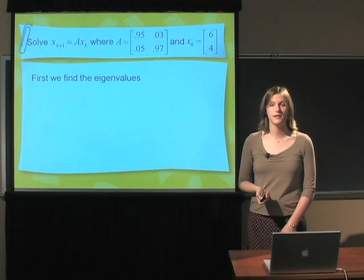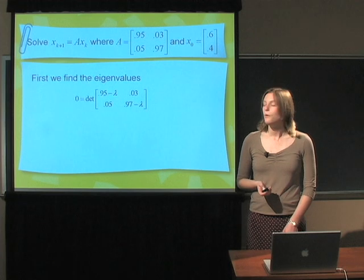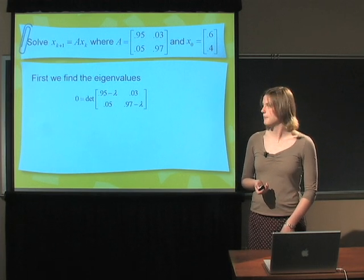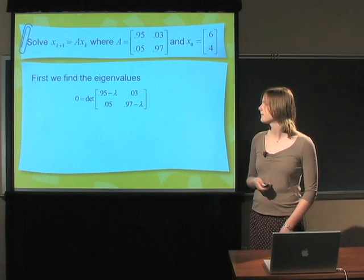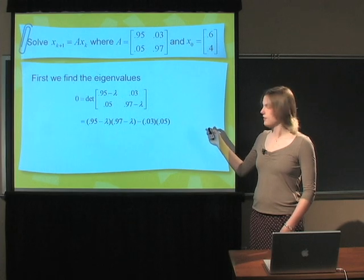First thing we have to do is solve for the eigenvalues. In order to find the eigenvalues, we have to take the determinant of A minus lambda times the identity matrix and set that equal to 0. Using our values and finding the determinant, we find the following characteristic equation.